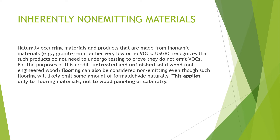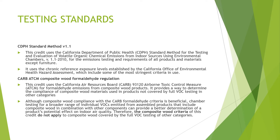For the purposes of this credit, untreated and unfinished solid wood flooring can be considered non-emitting even though such flooring will likely emit some amount of formaldehyde naturally. This applies only to flooring materials, not to wood paneling or cabinetry. The testing standards used are: the CDPH standard method version 1.1, which uses chronic reference exposure levels established by the California Office of Environmental Health Hazard Assessment — some of the most stringent criteria in use — applied to emissions testing for all products except furniture; and the CARB ATCM composite wood formaldehyde regulation (California Air Resources Board 93120 ATCM for formaldehyde emissions from composite wood products), which provides a way to determine compliance of composite wood materials not covered by full VOC testing.